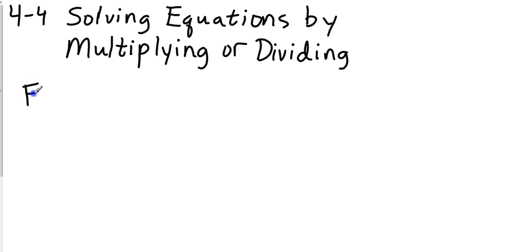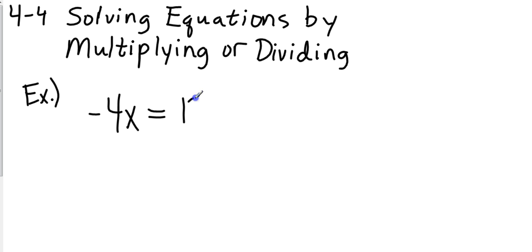So instead of addition and subtraction, you might have something like this. First question is, I have to find the operation. What are the negative 4 and the x doing? If they're side by side, if there's no separation, then this is a multiplication problem. This is saying negative 4 times x.